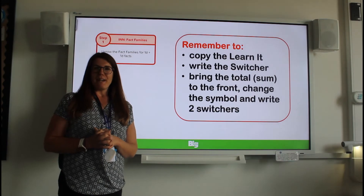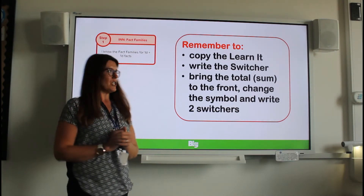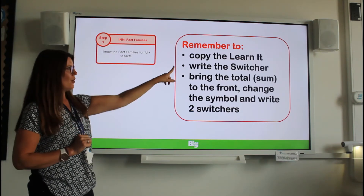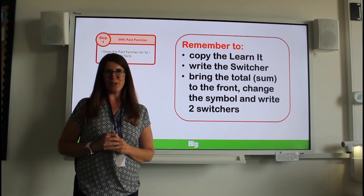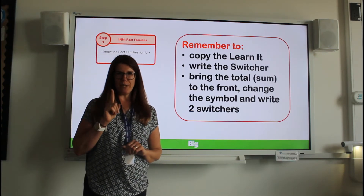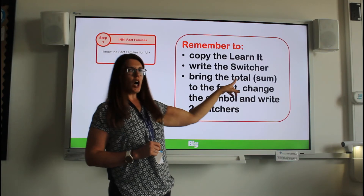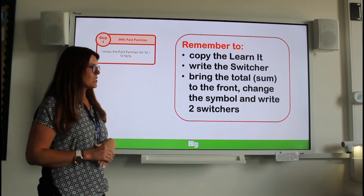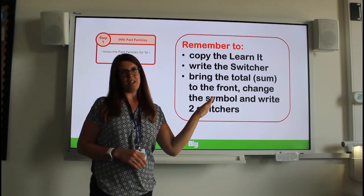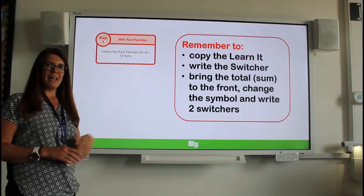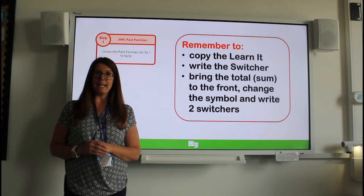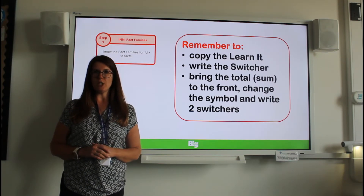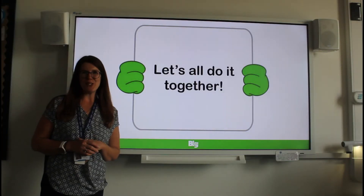So let's write some fact family calculations. To help you remember what you need to do: first, copy the learn-it down. Second, write the switcher — you know how to do that now. Third — this is where you need to concentrate — you bring the total, the sum or the biggest number that we had at the top of our fact family triangle, and it's going to move from being the answer to the front of your calculations. Then we're going to change from an addition calculation to a subtraction calculation. And then we're going to use the two switchers. Let me show you. Let's do it together.